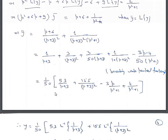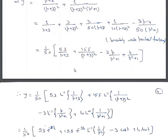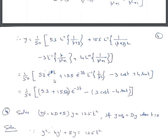Combining terms: (1/50)·[53/(p+3)] + terms in (p+3)² and (p²+1). Taking inverse Laplace of both sides: y = (1/50)·[53·e^(-3t) + 155·t·e^(-3t) - 3·cos(t) - 4·sin(t)].